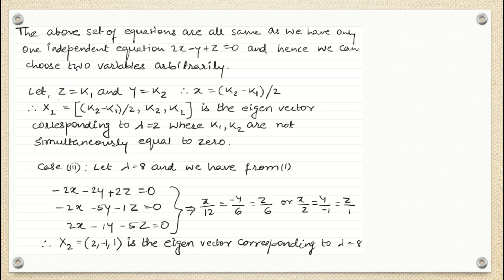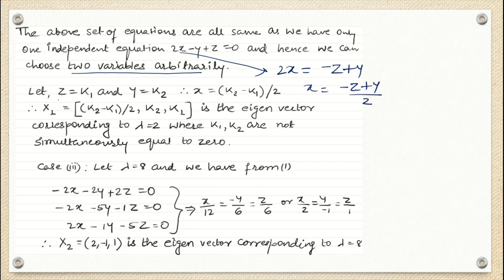We are going to choose two arbitrary variables, k1 and k2. Let z equal k1 and y equal k2. Then from the equation 2x minus y plus z equals 0, we get 2x equals y minus z, so x equals (y minus z)/2, which is (k2 minus k1)/2.